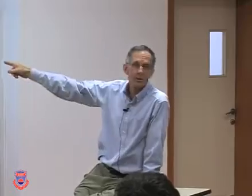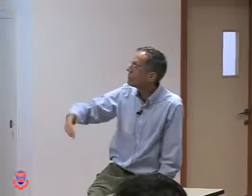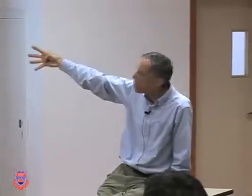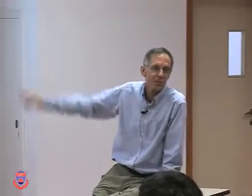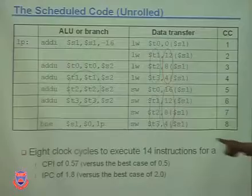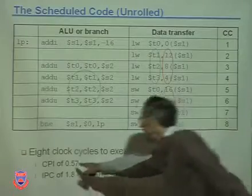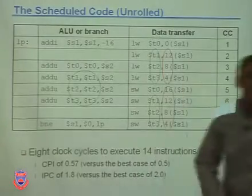The most important reason is that if you unrolled to 8, you'd have more empty slots, more no-ops than you do now. So the actual percentage of efficiency starts to drop.